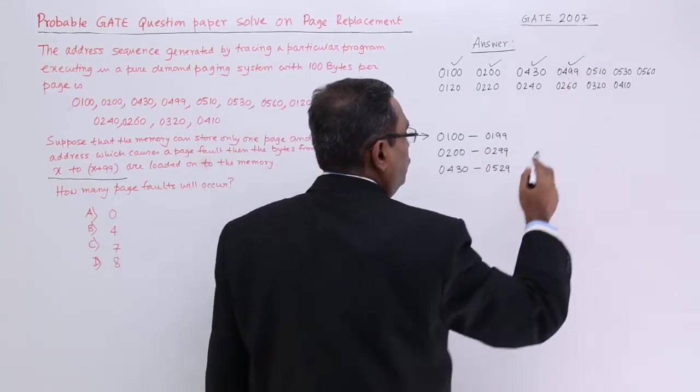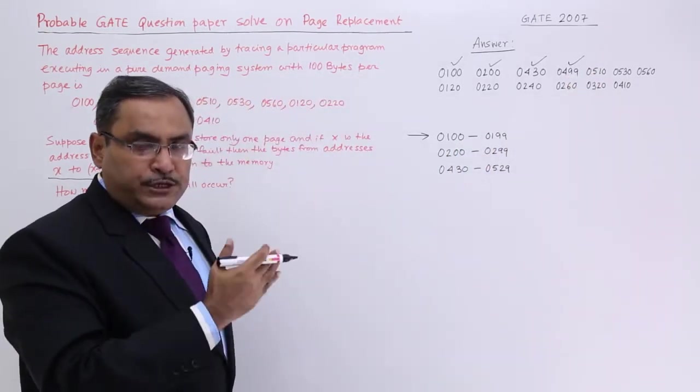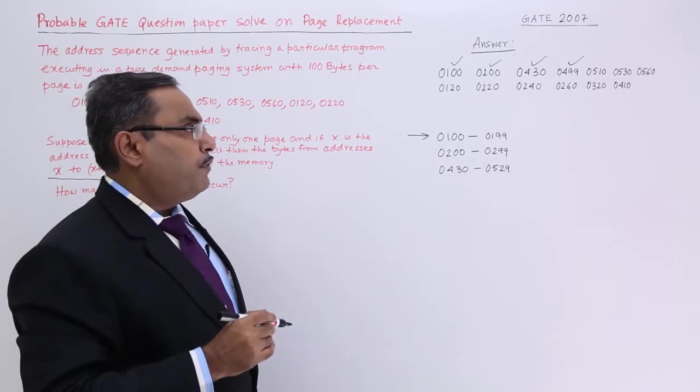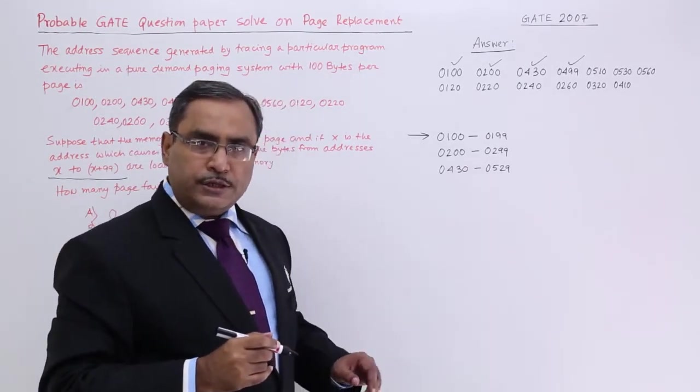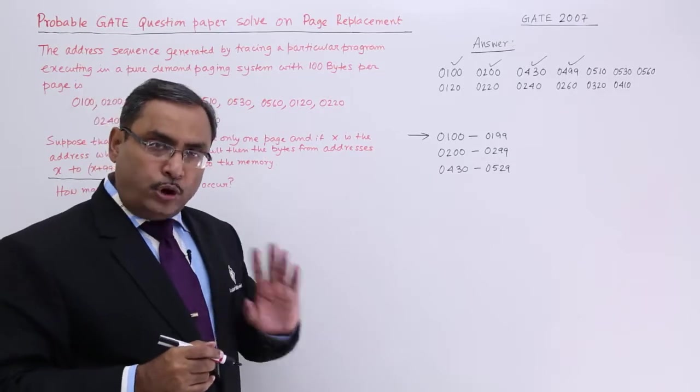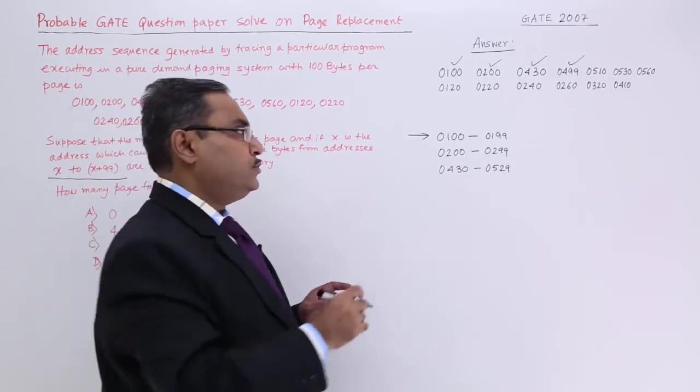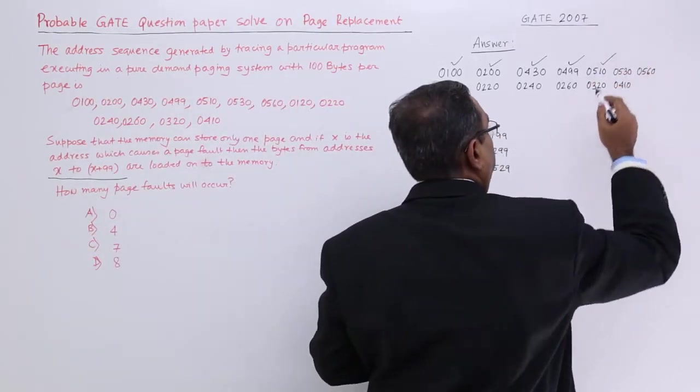499 is falling in this zone. So there is no need to fetch a new page. Now, 510 is also falling in this particular range. So for the 510 there is no need to bring a new page. It is a page hit.